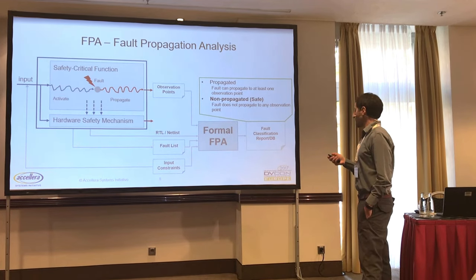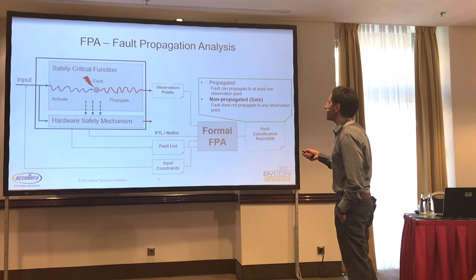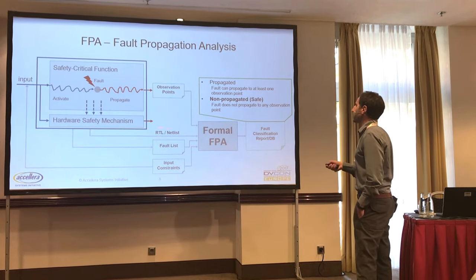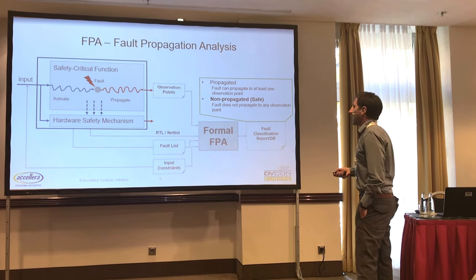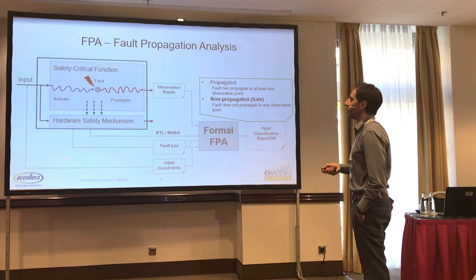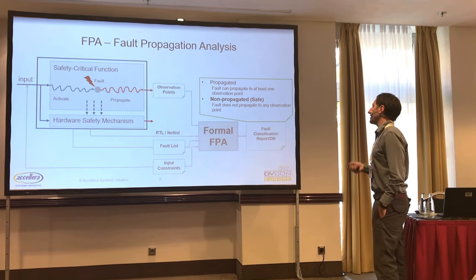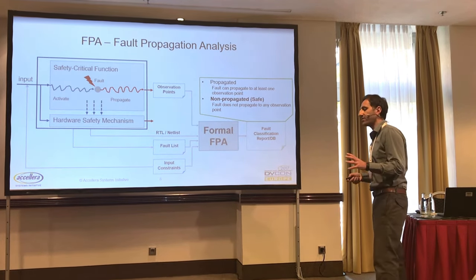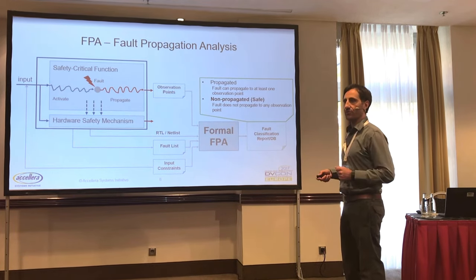Let me give some ideas of how these analyses work and how you can get your formal tool to scale to these problems. The analysis we want to make is: we have some observation points and we want to check whether a fault can propagate to them. We feed the tool the RTL or netlist, the fault list specifying which faults to consider, and perhaps some input constraints such as switching off debug or test mode. One important result we want to obtain is identification of safe faults, because if you can prove them, they help get your coverage up.